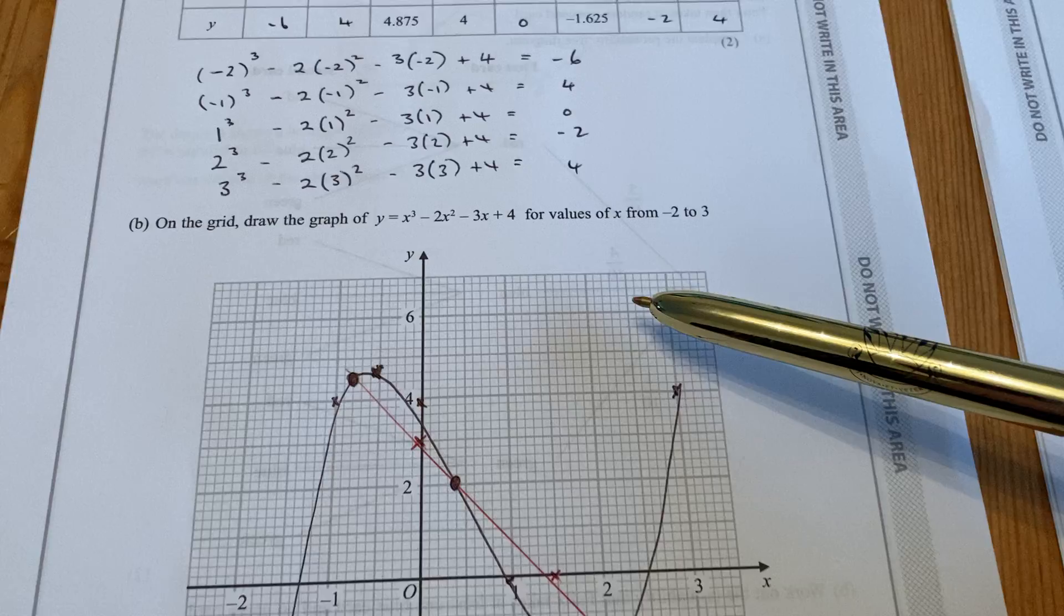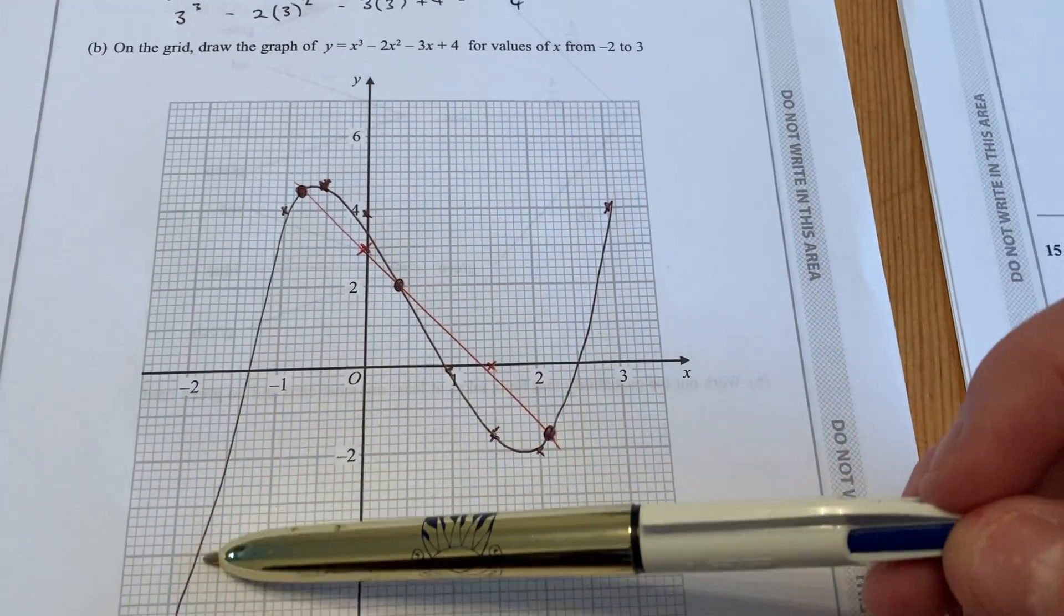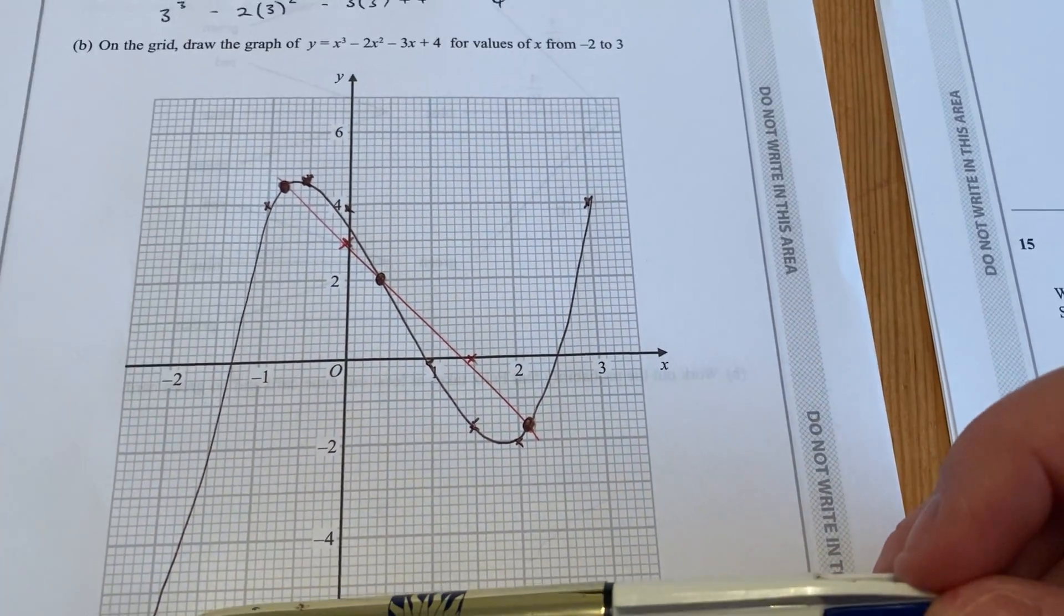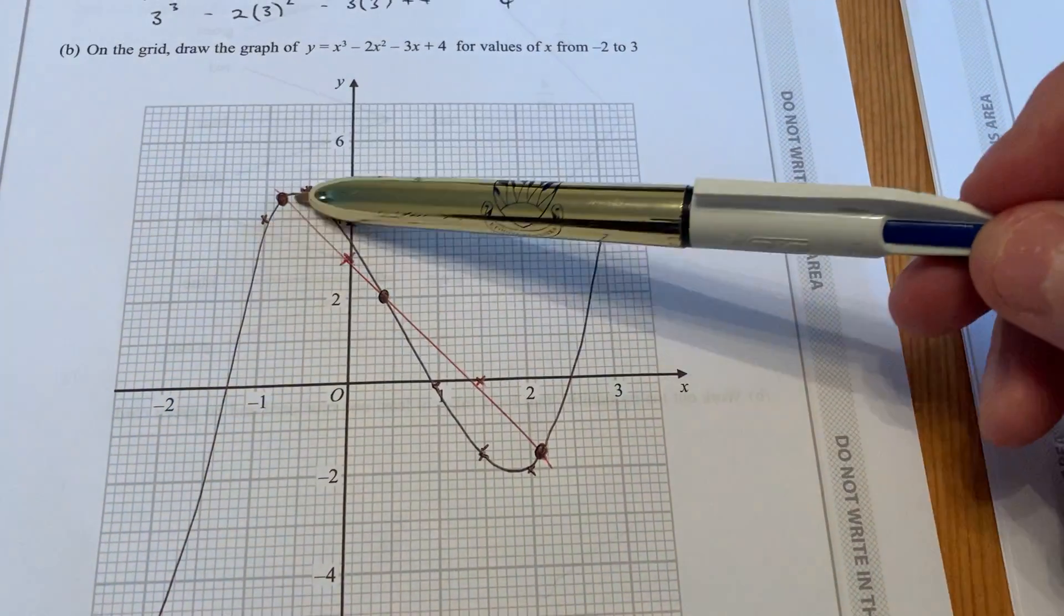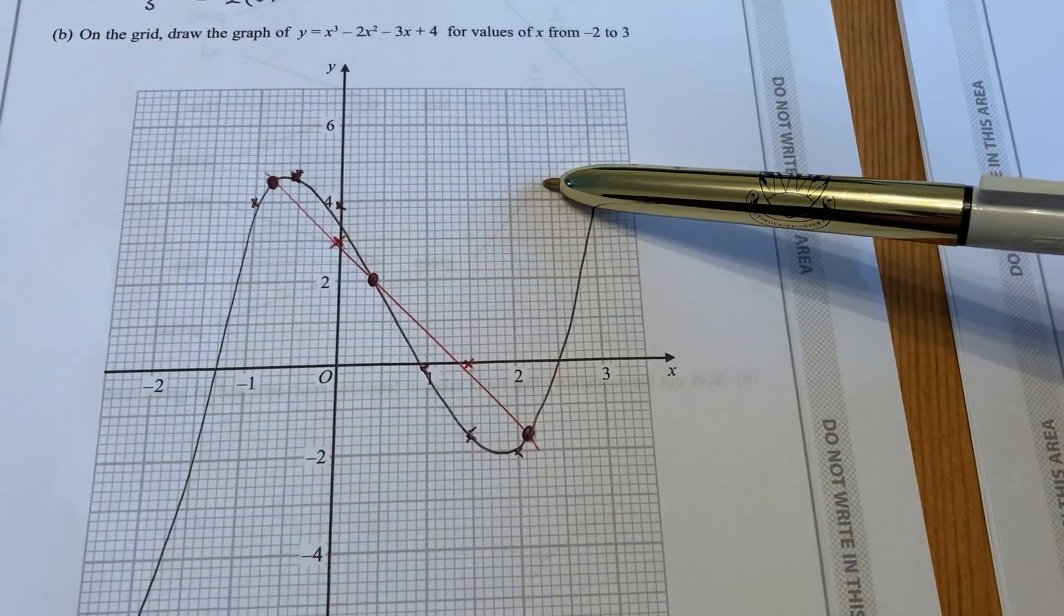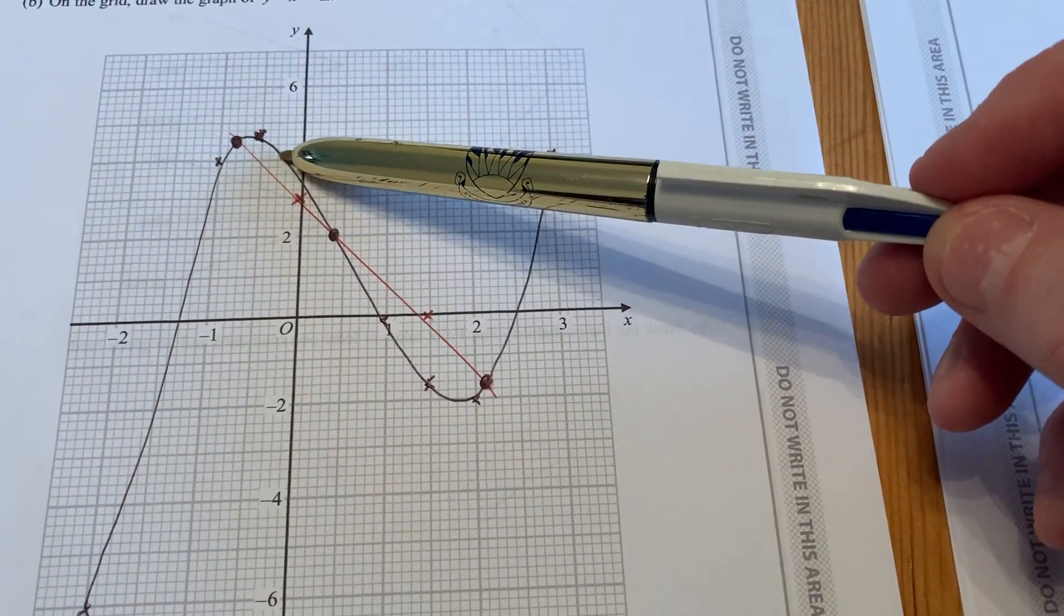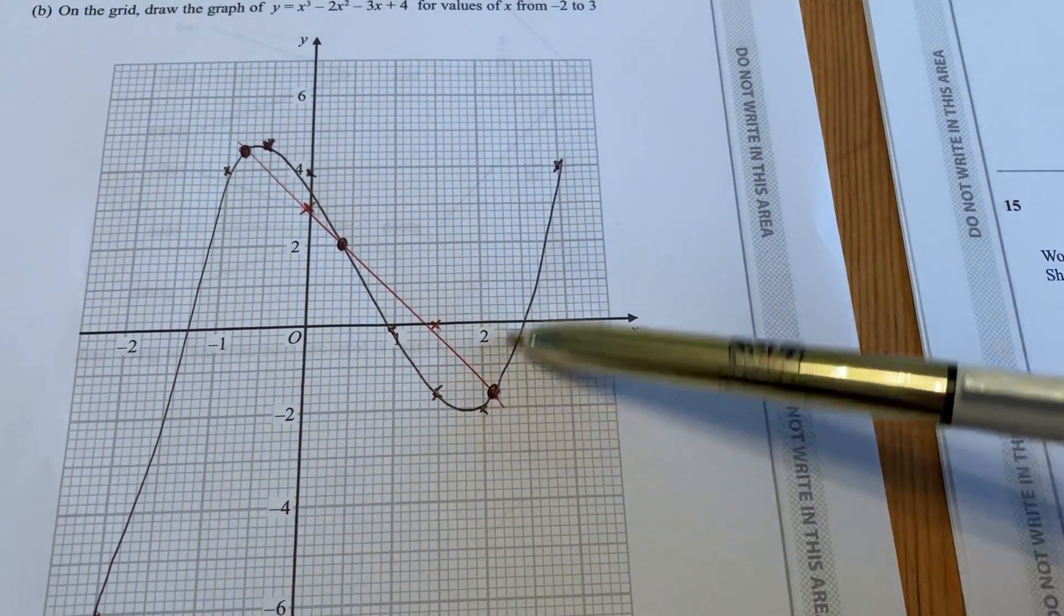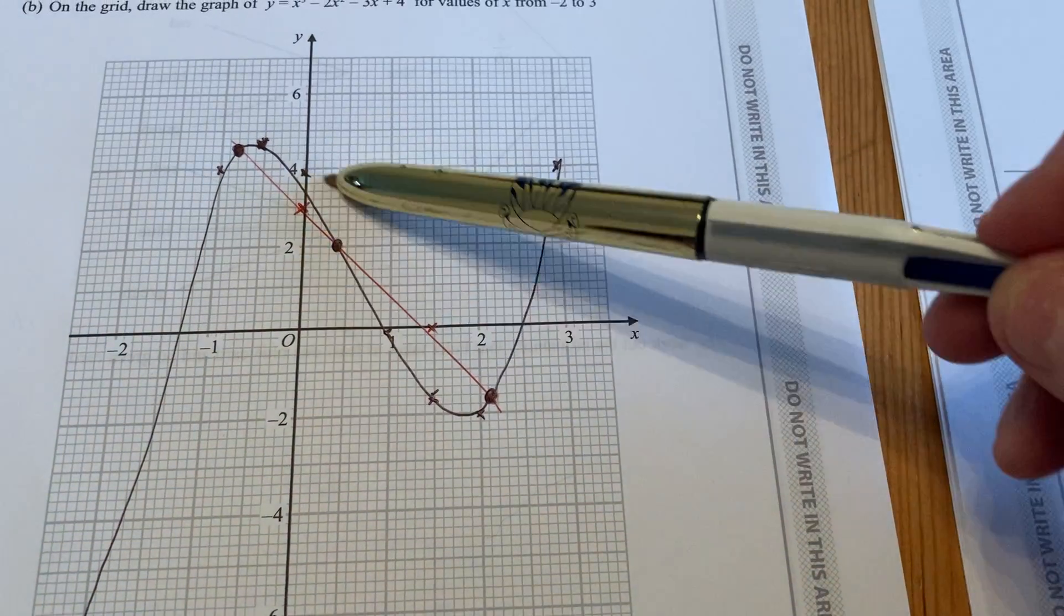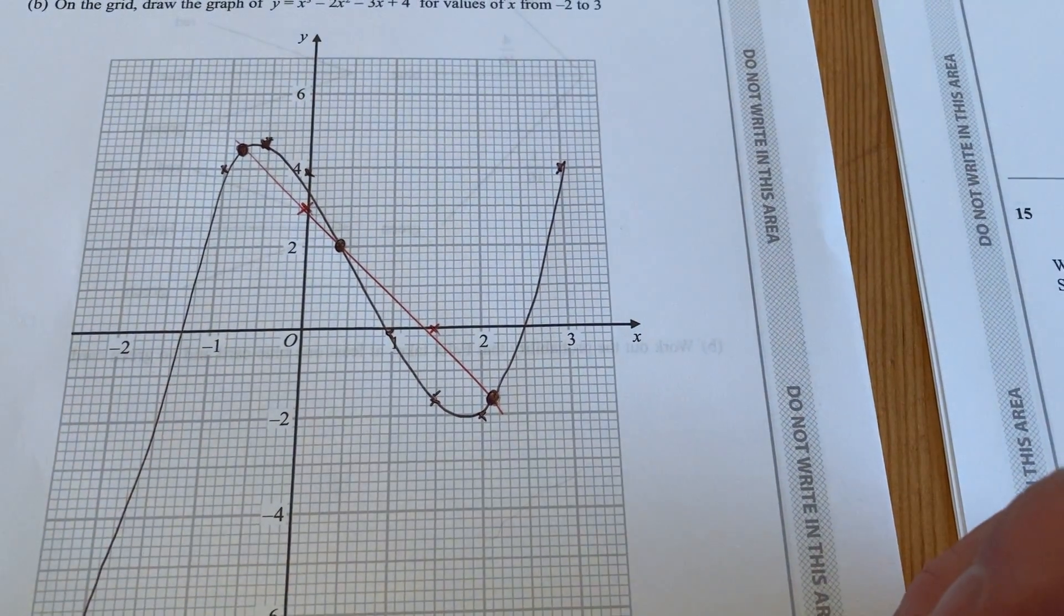The graph will look something like this, the black line. It's a cubic, a positive cubic, so it's coming up, then down, and then back up again. I've plotted most of the black crosses here, and you need a nice smooth curve for a cubic.